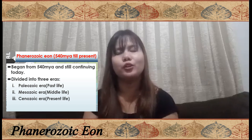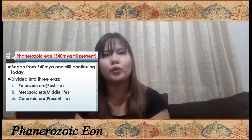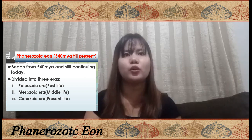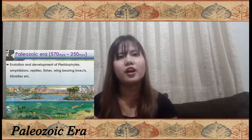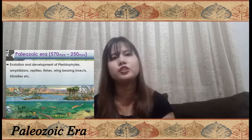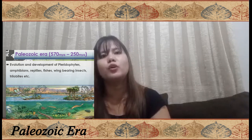Now let's talk about the Phanerozoic eon, which consists of three eras: Paleozoic, Mesozoic, and Cenozoic. Let's look at some highlights of the Paleozoic era. This era is marked by the evolution and development of amphibians, reptiles, fishes, insects, and plants. This was a very significant era because organisms began to evolve on Earth, and it was here that the first organisms with hard shells or exoskeletons appeared.